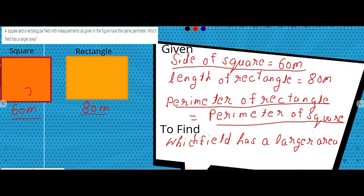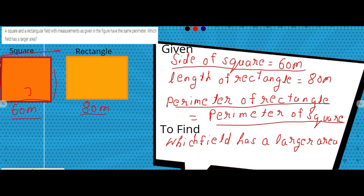Perimeter is the sum of the boundary of a figure. For the square with side 60, if we add all four sides, that gives us the perimeter. Similarly, the sum of all sides of the rectangle gives its perimeter. So perimeter is the sum of the boundary of a figure.